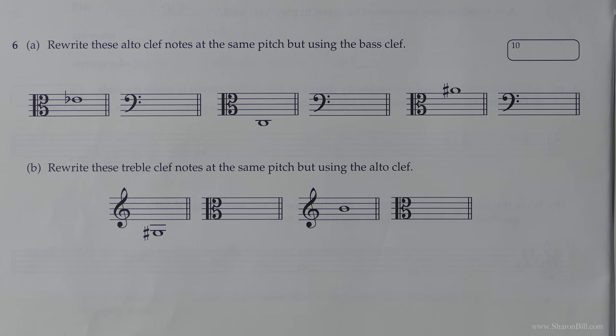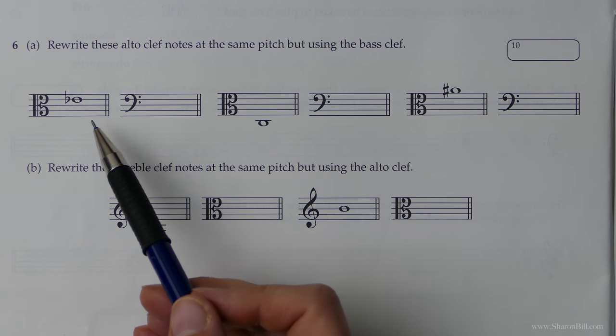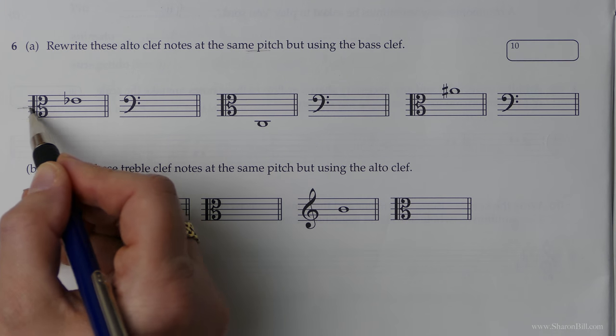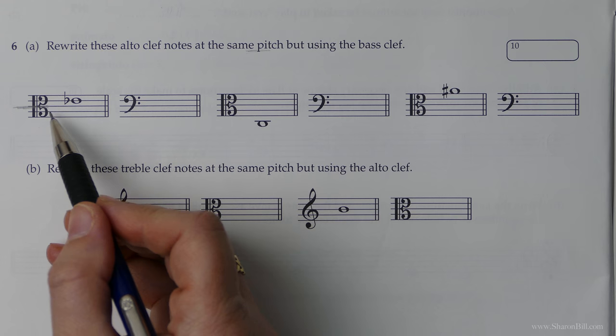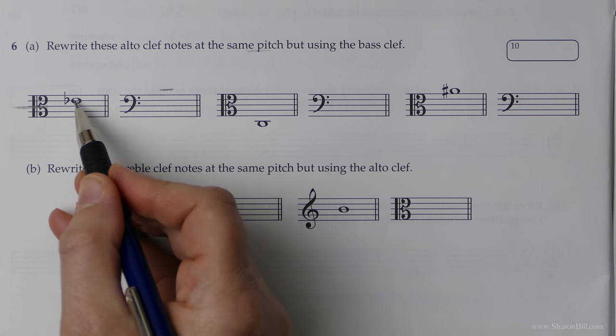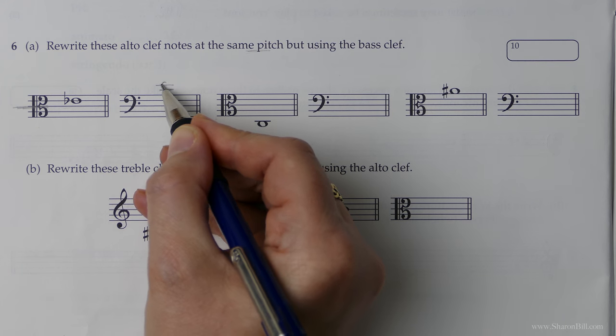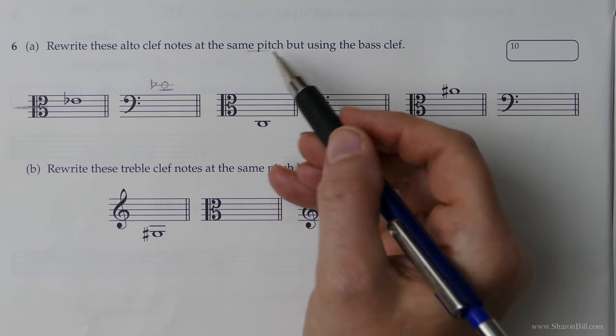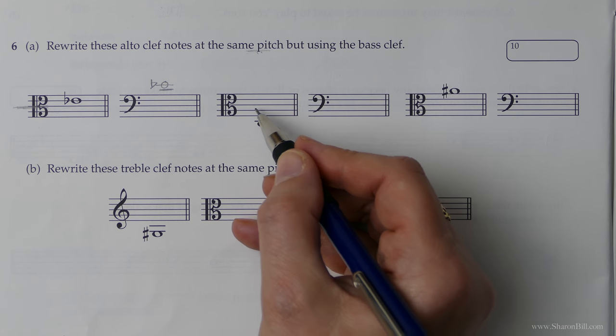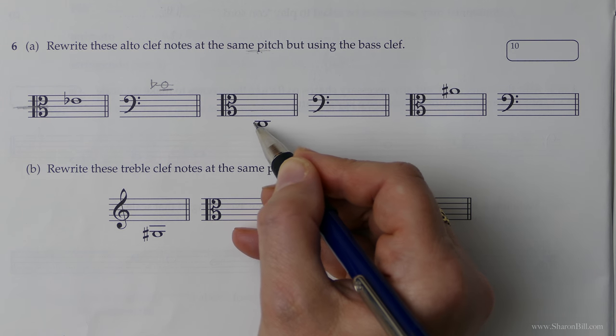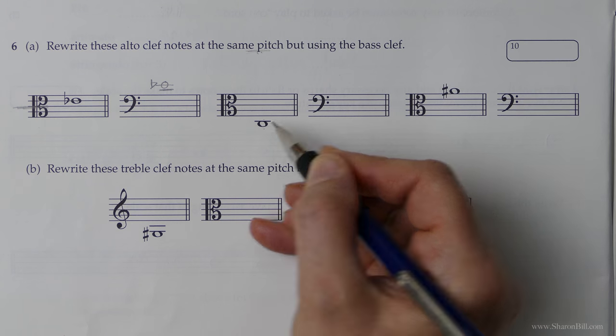Next question. Rewrite these alto clef notes at the same pitch, that's the important thing, but using the bass clef. We've got to make sure that we don't end up jumping an octave inadvertently. Don't forget this is middle C here. So we've always got to be thinking here's middle C in the bass clef. Here we've got the E flat above middle C: C, D, E, C, D, E flat. If you wrote the wrong octave then you'd lose marks because it's not the same pitch then. Let's work out C, B, A, G, F, E, D, C. So that's a whole octave lower than middle C. So there's middle C. So a whole octave lower will be this one here.